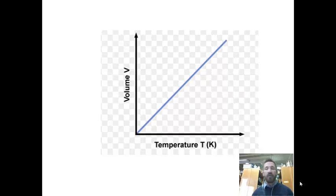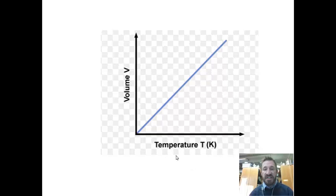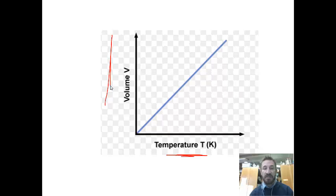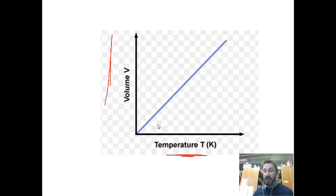First of all, what type of relationship do you think you see here? As we increase temperature, which we see on the x-axis, we see the volume gets bigger. So an increase in temperature means an increase in volume. This is a type of relationship we'd say is direct.